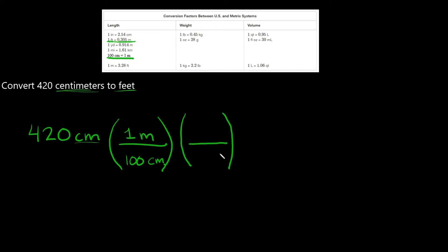Now I'm gonna put my other relationship in this second fraction. What units go on top and which on the bottom? Remember, you never want the same units on the same side. Since I already have meters on top in the first fraction, I'm gonna put meters on the bottom here. The relationship is 1 foot is equal to 0.305 meters, so 0.305 meters goes on the bottom and 1 foot goes on top — which is the unit we're trying to convert to.